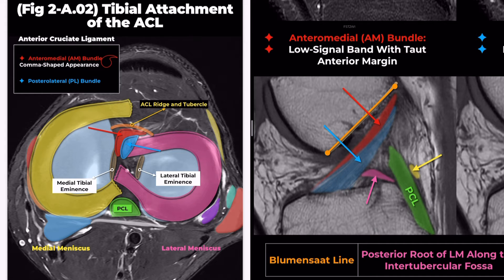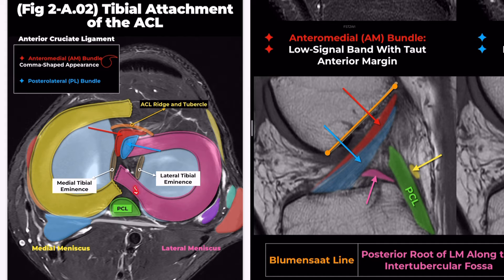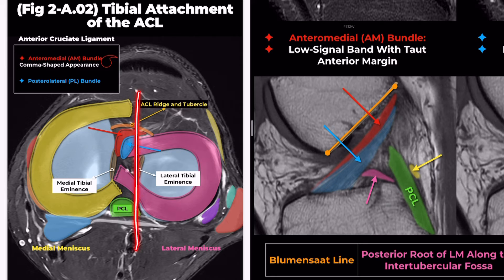The posterior root of the lateral meniscus mainly attaches to the intercondylar tubercular area, with a thin, long ventral extension reaching just posteromedial to the tibial attachment of the ACL. On slightly lateral sagittal MRI images of the central knee, the anteromedial bundle of the ACL is visible anteriorly.